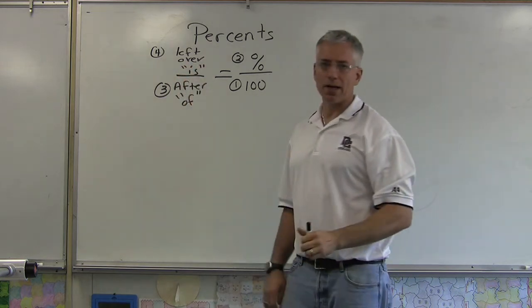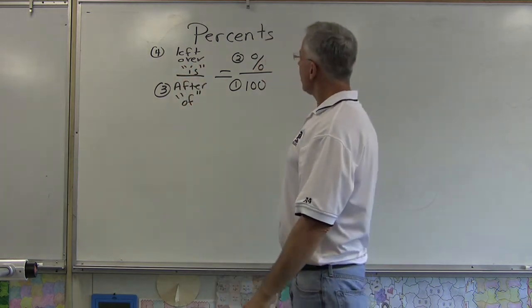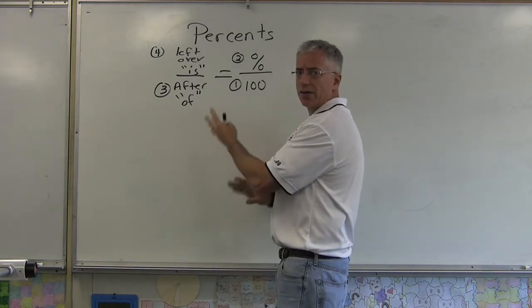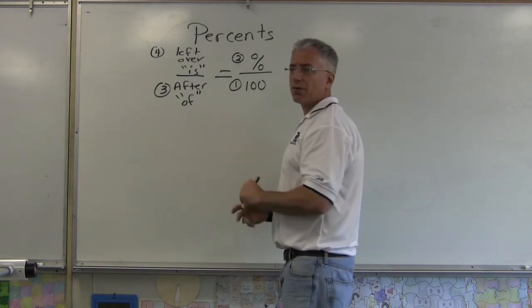It's either right before or right after that. Then you have a fraction equaling a fraction, so one of them is going to be X, and you can cross multiply and solve for that.